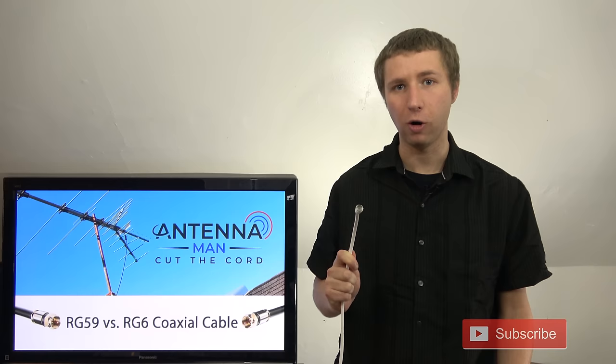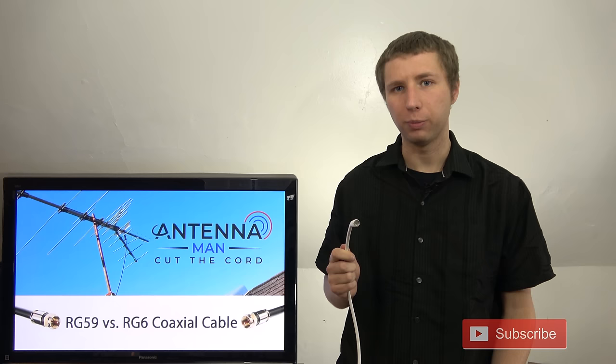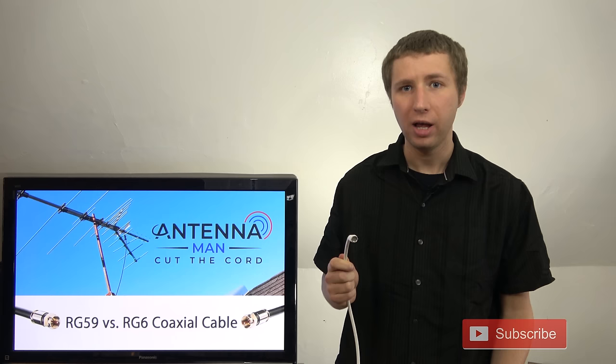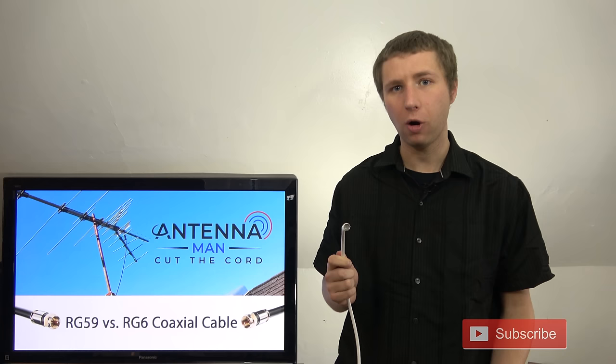RG59 cable isn't shielded as well as RG6, but a lot of times the center conductor is made of copper clad steel instead of solid copper. Copper clad steel doesn't conduct as well as solid copper, and is more prone to signal loss.